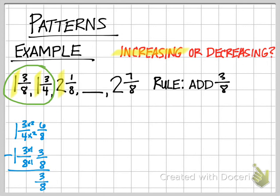Now I can add that to my rule because I know that I'm going to be adding three-eighths each time. So my rule is add three-eighths. Now that I know the rule, I have to apply that rule to find the next term. You're going to take the term that is right before the blank, so the one that is marked in green, two and one-eighth, and I set that up as an addition problem.